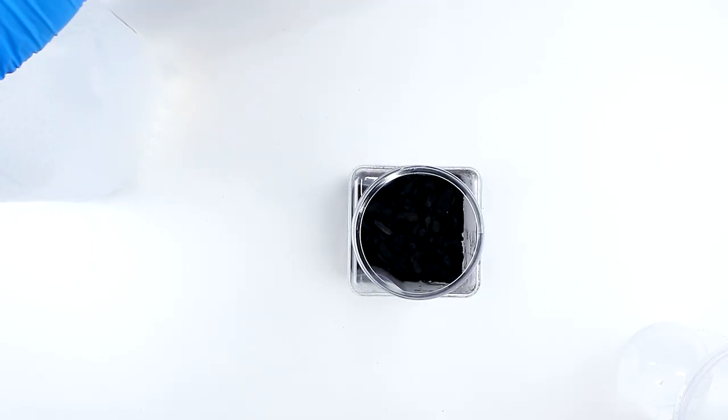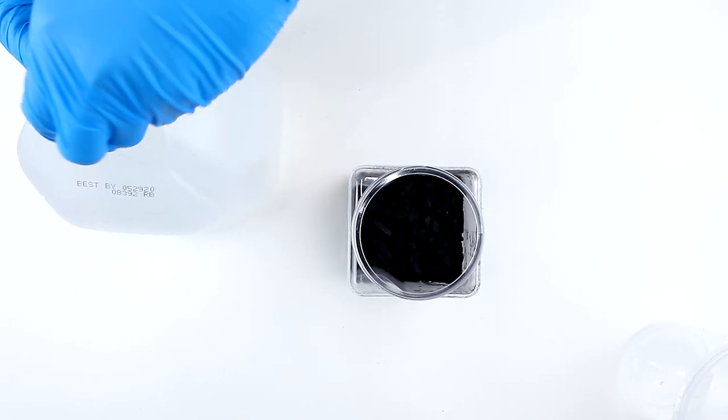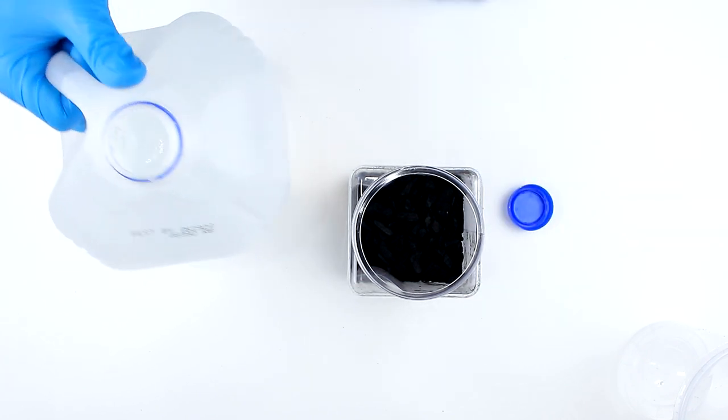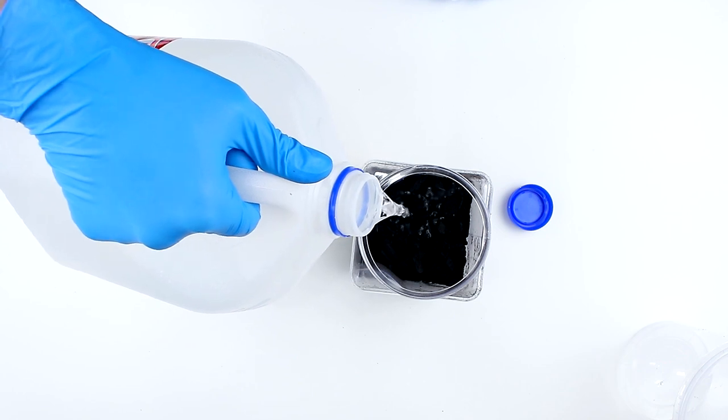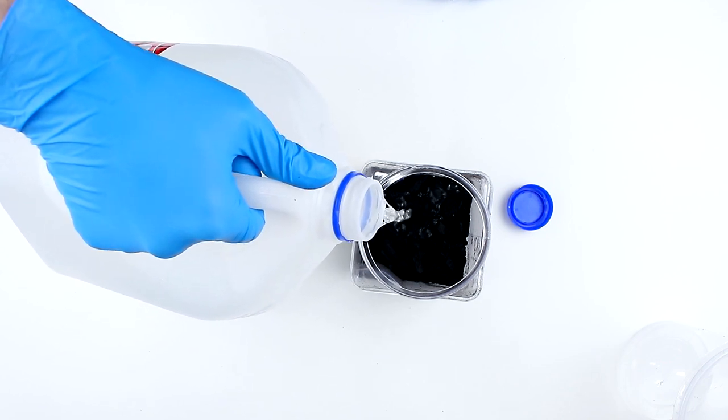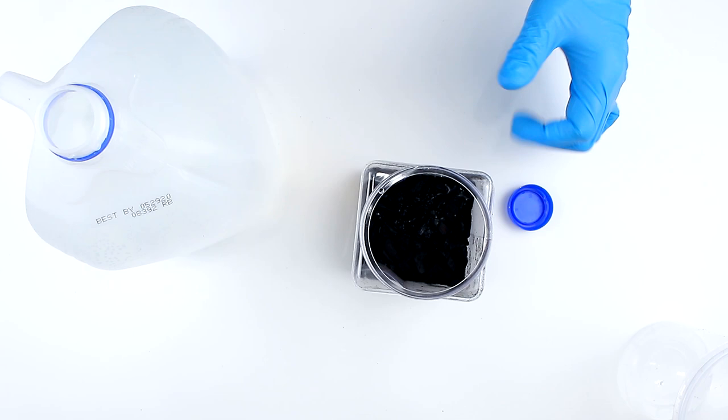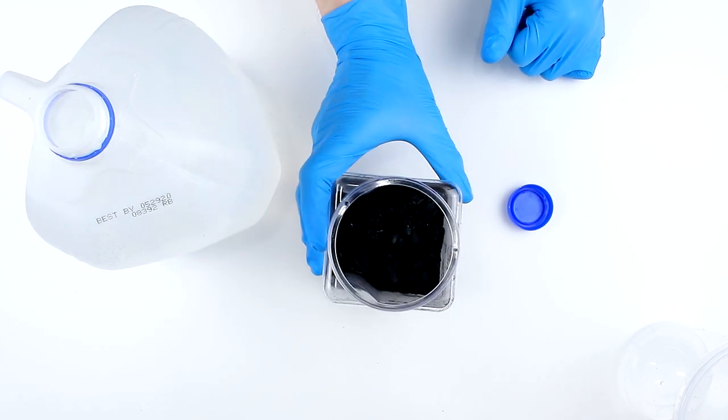Next we're going to add some distilled water. I'm going to fill this to about one third or one half of the depth of the substrate. You don't want too much water because you want some surface area above the water where the springtails can actually live in there.